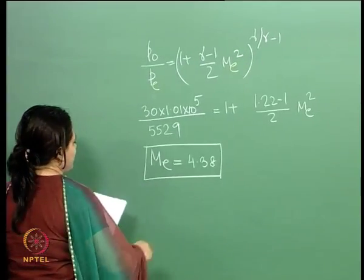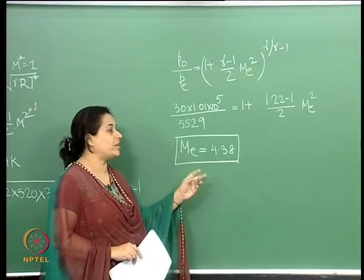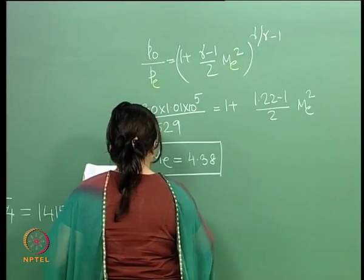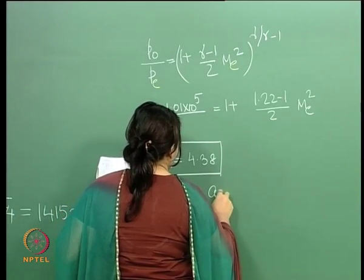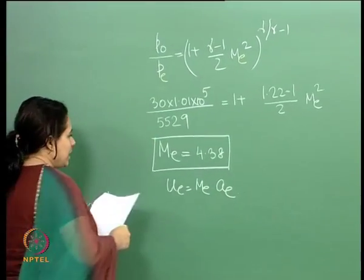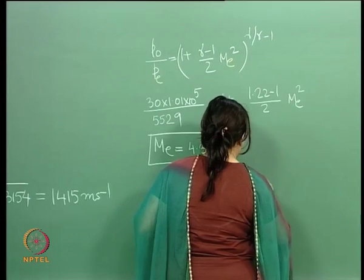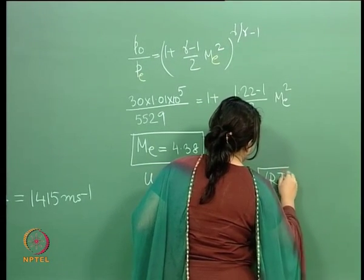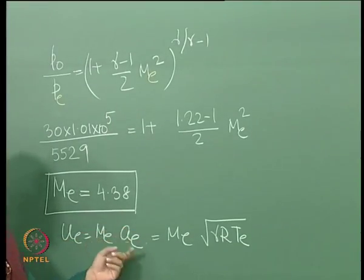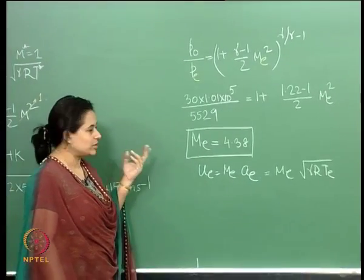Having found the exit Mach number, we need to calculate U_e = M_e × a_e, where a_e is the speed of sound at the exit. We do not have T_e yet, so we use the isentropic temperature relation again, this time at the exit with M_e = 4.38 and T_0 = 3500 Kelvin.